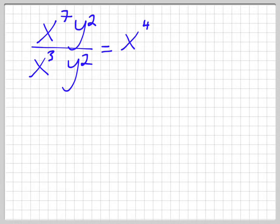So I just did that one without writing the steps. So 7 subtract 3 is 4. And then y. So 2 subtract 2. So 2 subtract 2 is 0. And of course, you may or may not know that anything to the exponent 0 is 1. So really this is just equal to x to the 4.